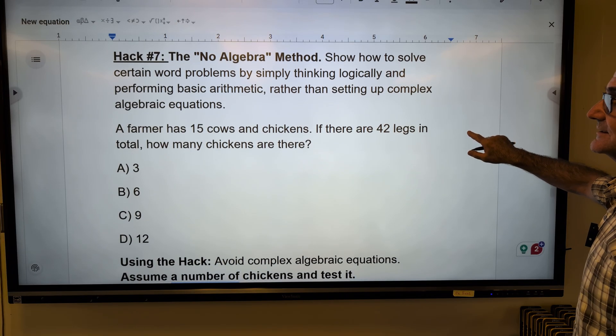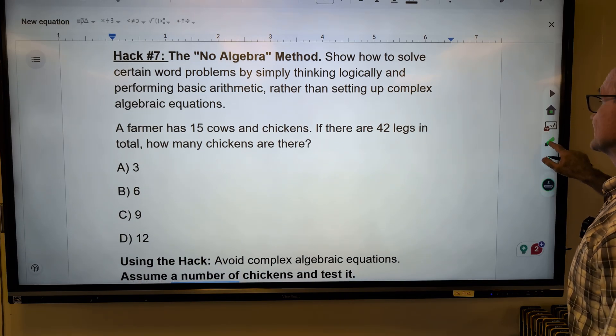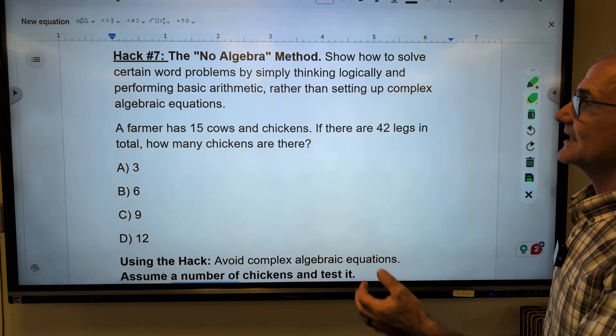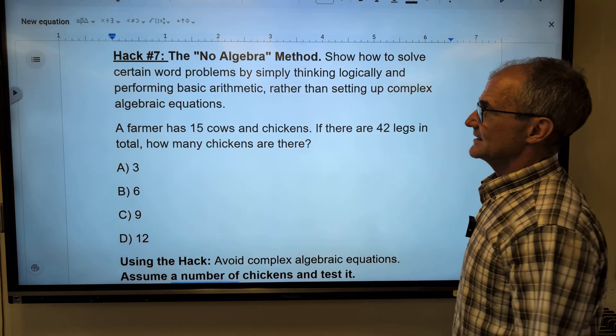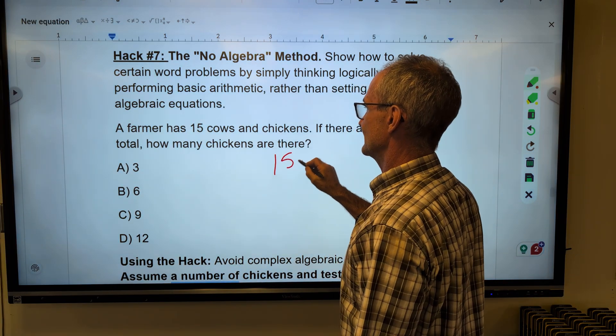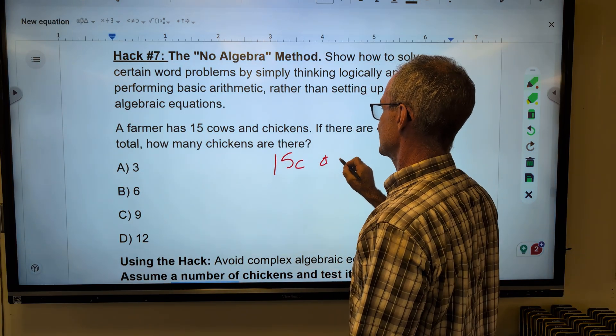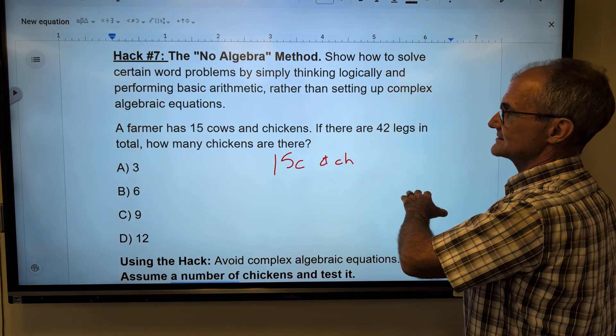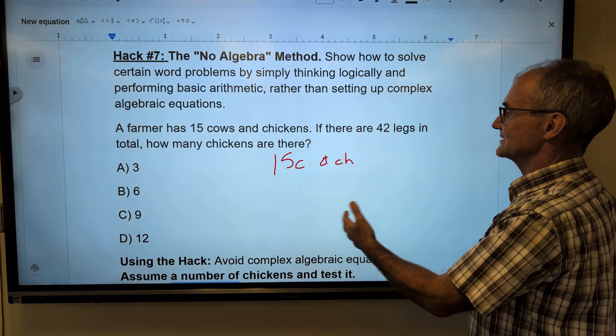Okay, hack number seven, the no algebra method. Show how to solve certain word problems by just thinking logically. So just kind of think this one through, try and draw a picture out. I have fifteen cows and chickens. There are forty-two legs. Well, I don't know. Let me just pick a number like ten.